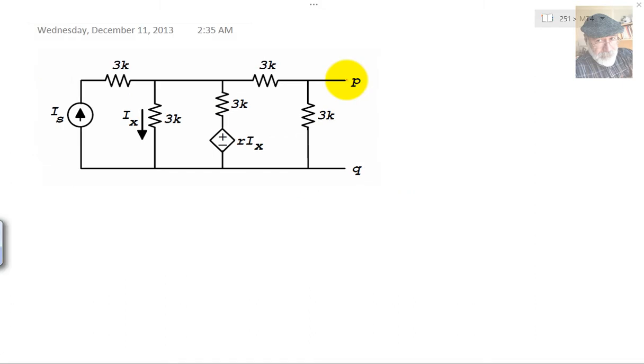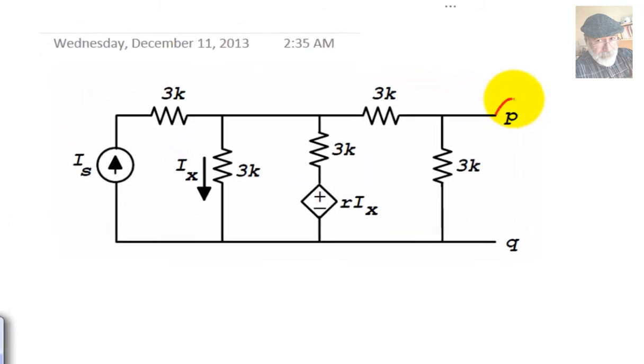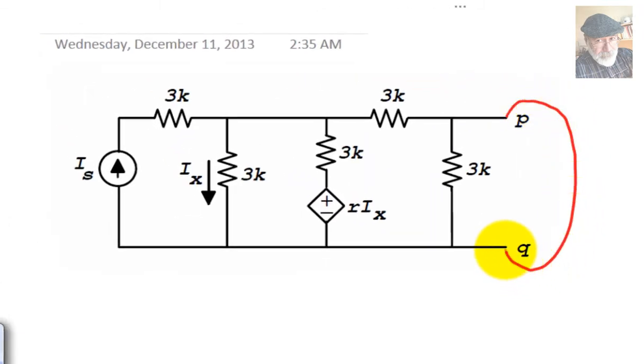For the second part of this exercise, part B, we are to short-circuit the port PQ and determine what is the current I short-circuit through that short-circuit, through that wire, flowing from top to bottom.